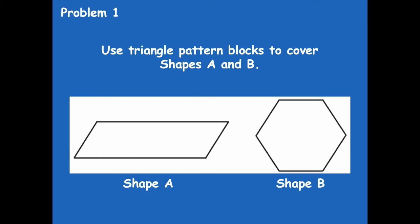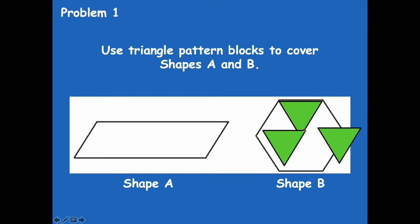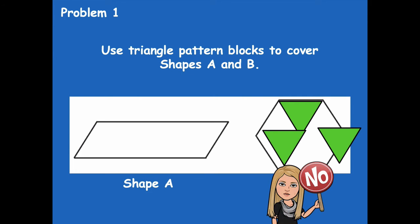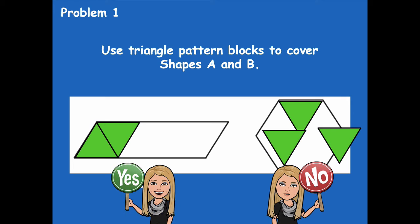Pause the video, do that, and write on your problem set how many triangles you need to cover each shape. Now, one important thing: notice the wrong way — triangles overlapping each other or hanging outside the shape. Make sure when you use your pattern blocks they line up nice and neat, not overlapping and not sticking outside of the shape. The yes-example is on the left; the no-example is on the right.